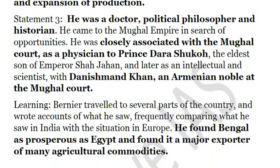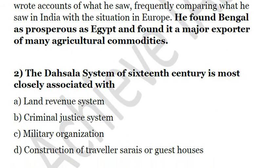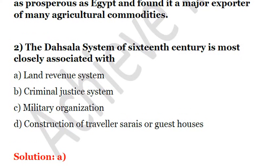The second question: the Dasha Allah system of the 16th century is most closely associated with — A. Land revenue system, B. Criminal justice system, C. Military organization, D. Construction of travelers' rest houses or guest houses. The answer is A, land revenue system. The Dasha Allah system was basically a land revenue system in which the average of the past 10 years of production was fixed as the land revenue. This was known as the Dasha Allah system.